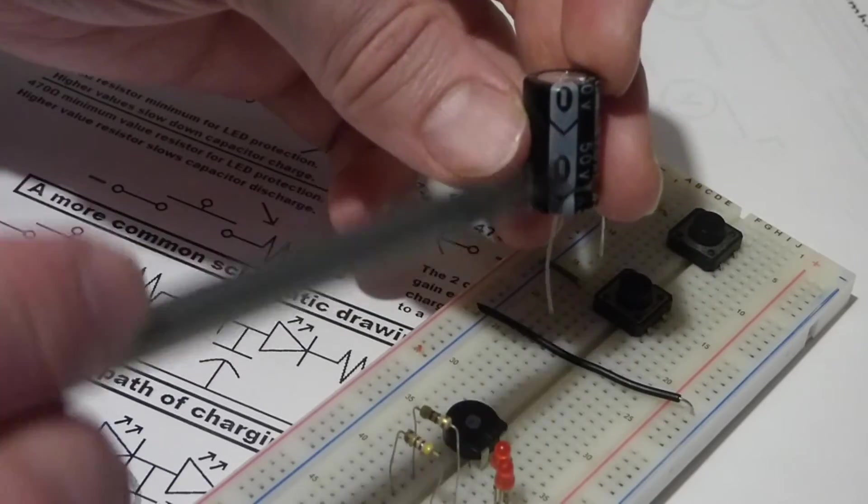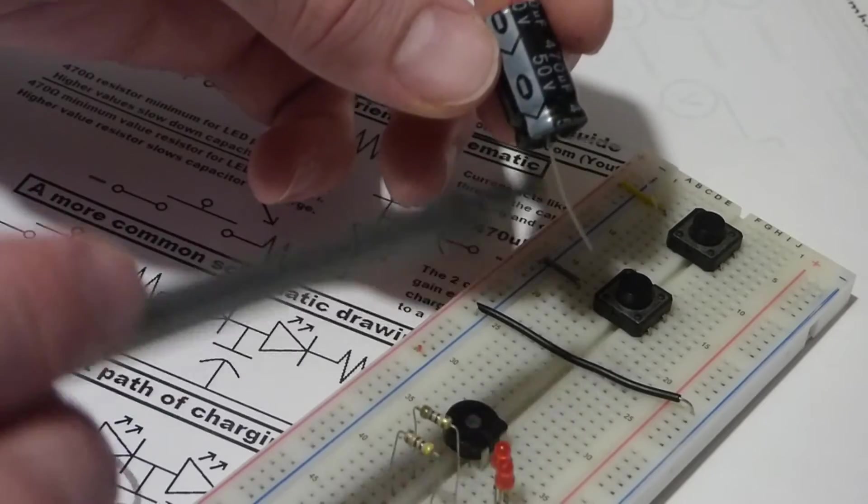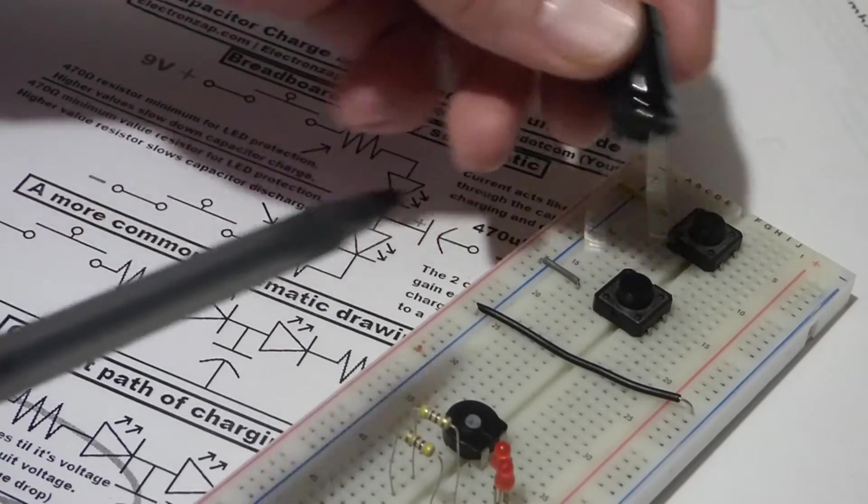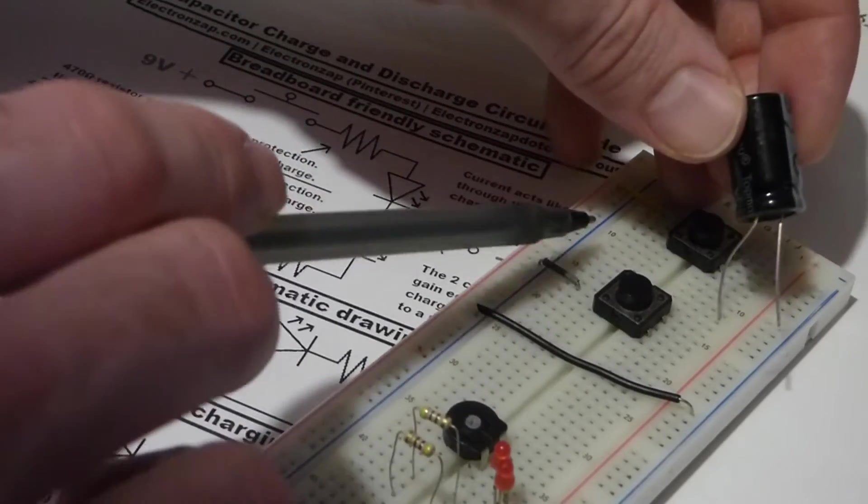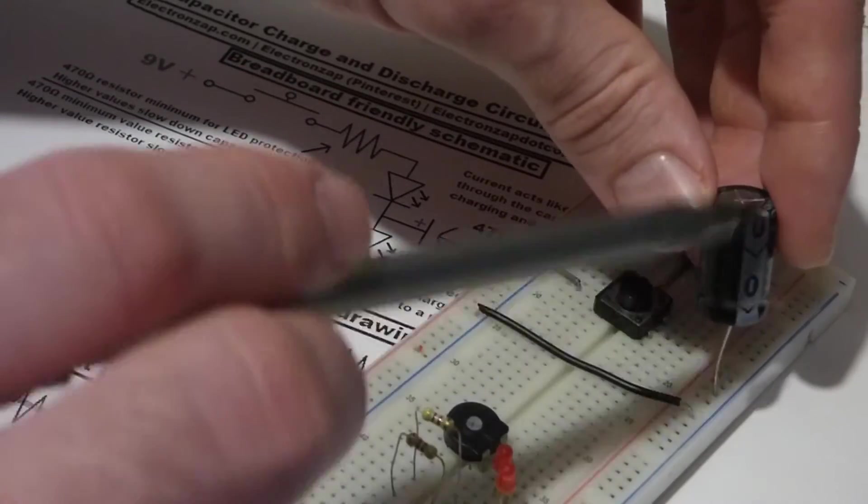Now this is polarized. This side needs to always be at least as negative as the other side. It should be more negative when it's charged. And so the positive side I'm going to set three holes down there in between the switches.